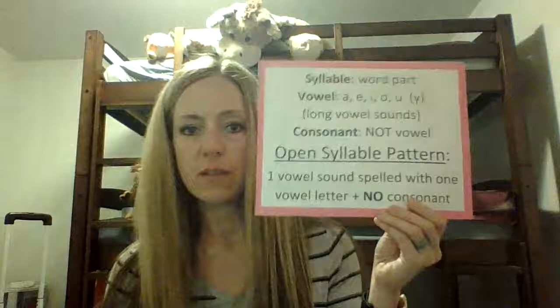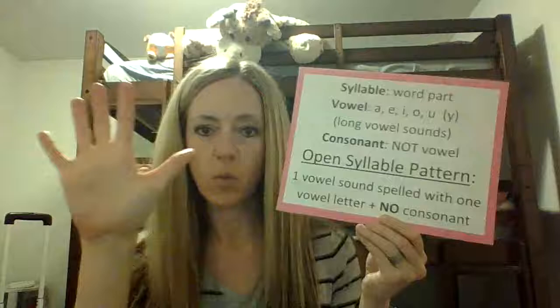Just a reminder: for open syllables we're working on one vowel sound spelled with one vowel letter and then no consonant after makes it open, and that will make the long vowel sound. So we're going to have to look and decide each syllable — which type is it — and then we can think about the vowel sound, and then we can read it. Lots of steps to think about as we do this.